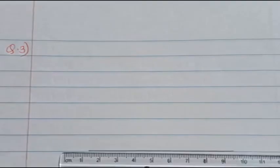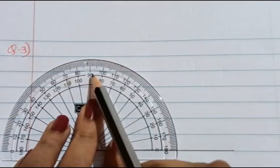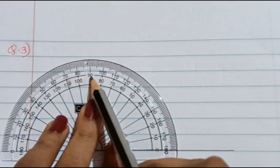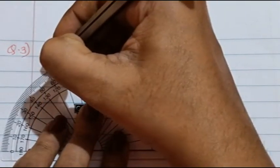Now for question number three, the first thing they have told is to draw an obtuse angled triangle. To draw an obtuse angled triangle, we will draw a line. As you all know, an obtuse angled triangle has an angle always more than 90 degrees. So we take the help of a protractor, place it at the origin of the line, and take a degree more than 90 degrees. I will take 120 degrees and mark a point there.